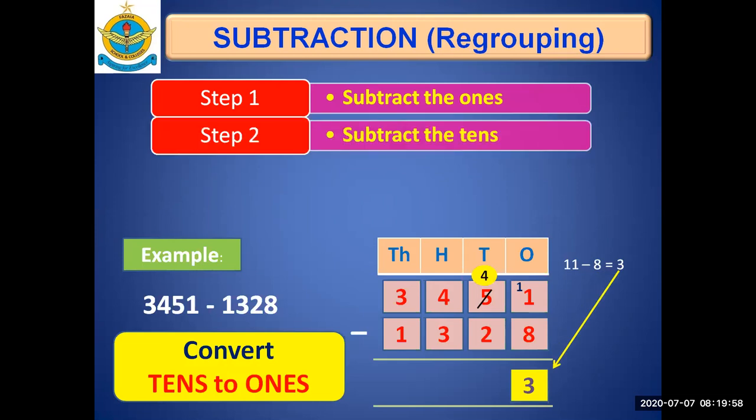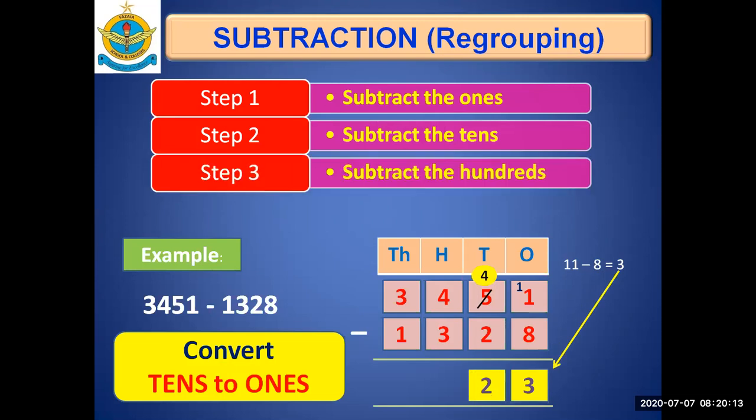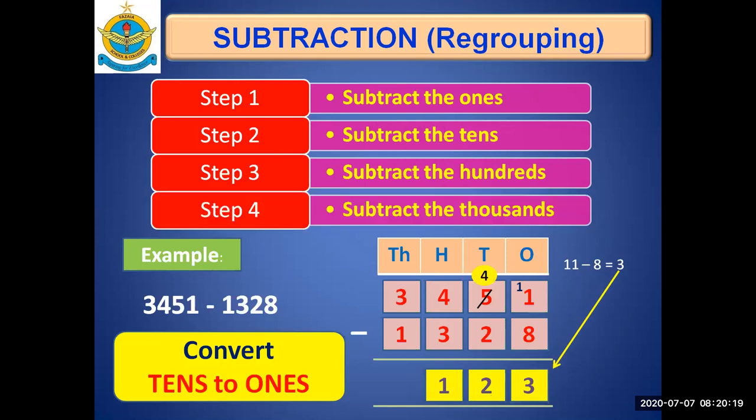Next step is subtract the tens. While subtracting the tens, remember we now have 4 in tens column. We don't have 5 because it has already given a borrow. So, 4 minus 2 is 2. Subtract the hundreds: 4 minus 3, that is 1. Write it in hundreds column. And lastly, subtract the thousands: 3 minus 1, that is 2. So, our difference is 2,123.